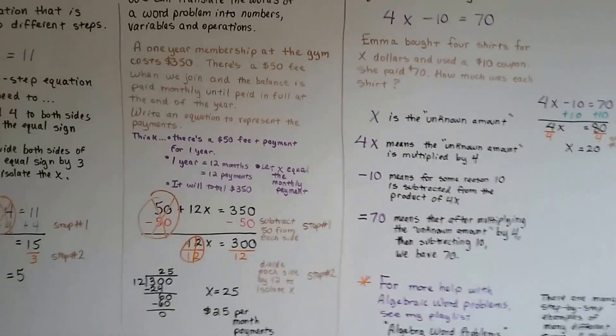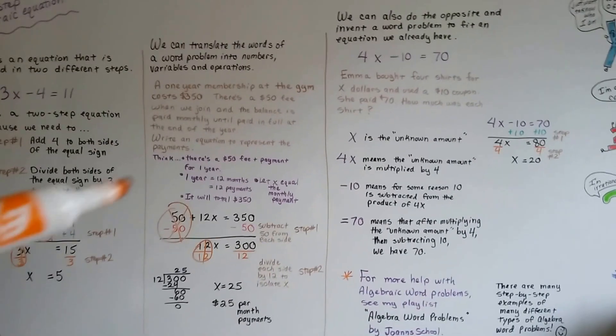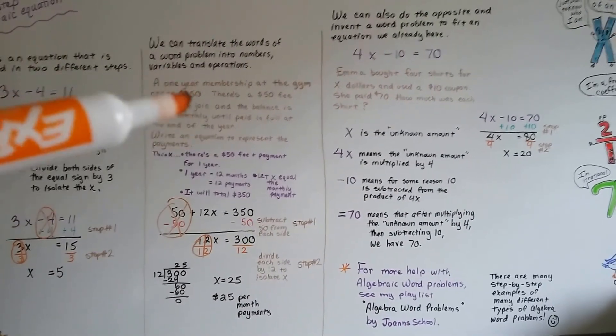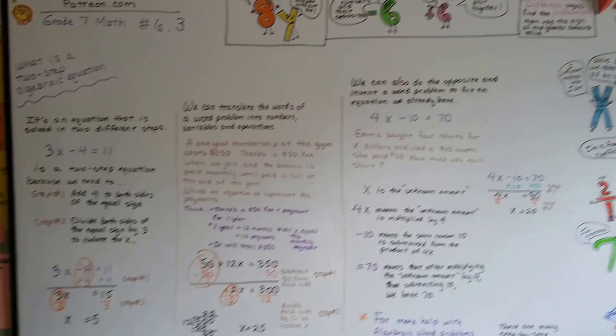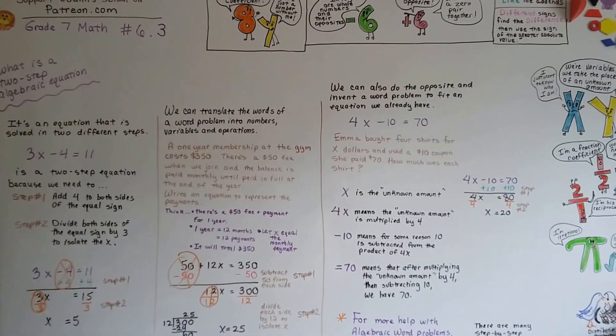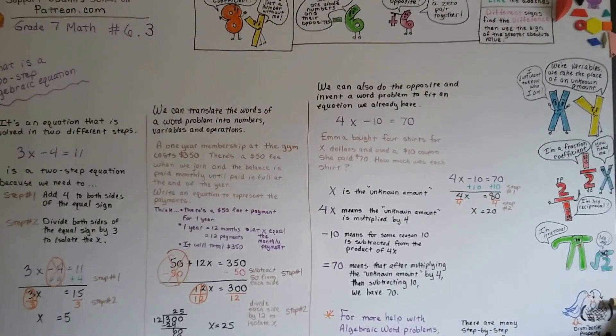So if you want to check those out, if you're having trouble with word problems, I actually take it step-by-step and break down each word problem in little parts. So, that's what a two-step algebraic equation is, and we're going to go on to 6.4 and we're going to talk more about solving them. I'll see you there. Bye.